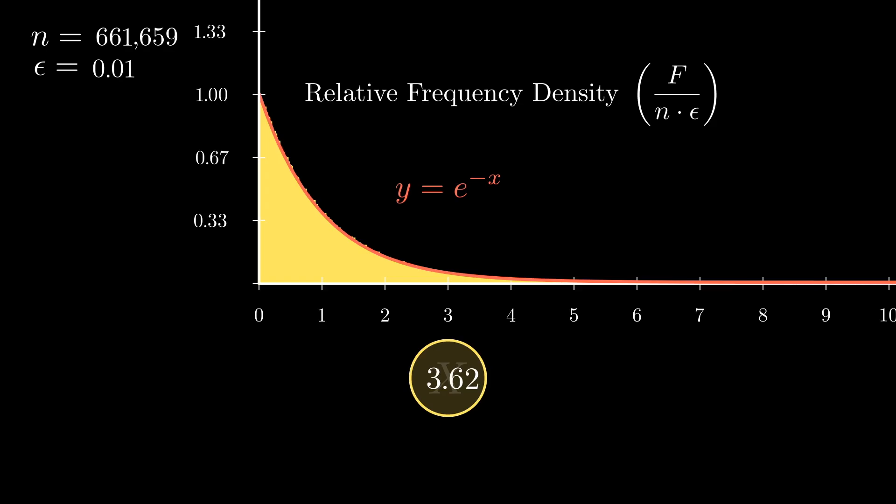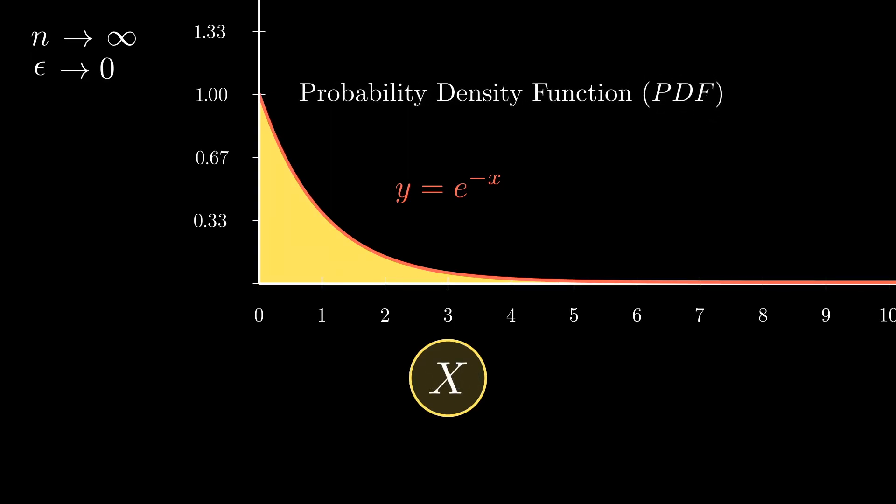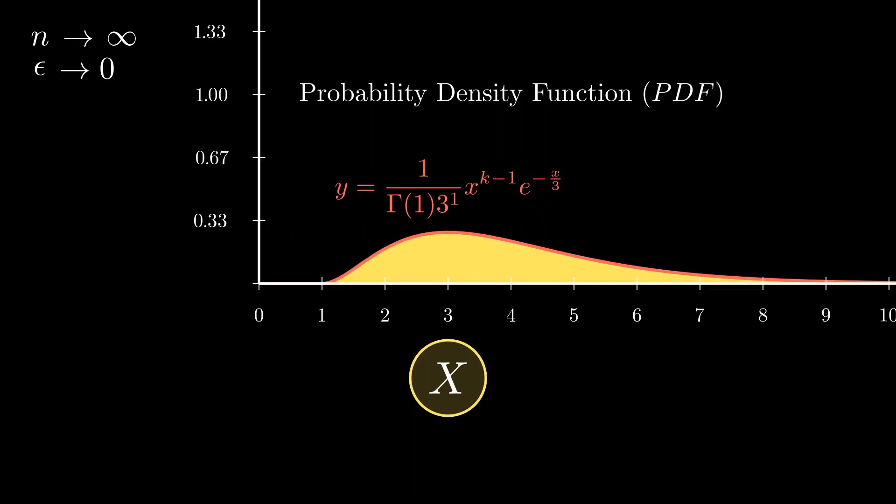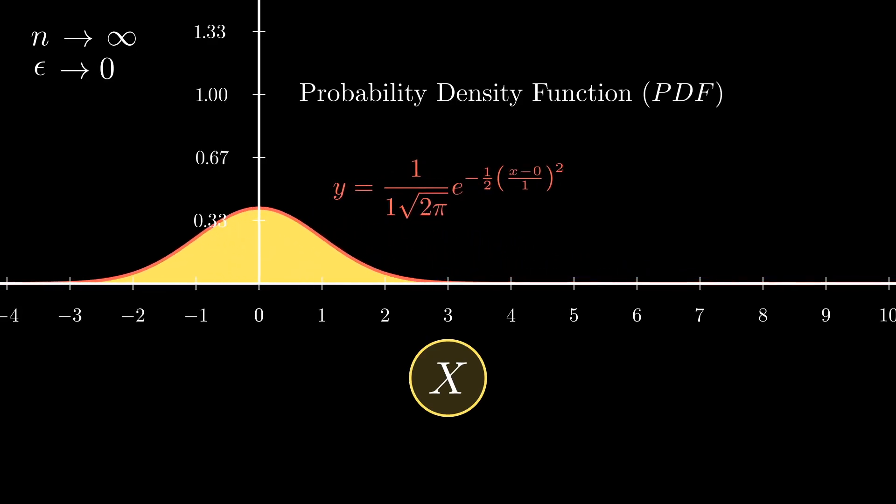In the limiting case where n tends to infinity and epsilon tends towards 0, the histogram is described by a curve called the probability density function or PDF. In this particular case, the probability density function is e to the minus x, but any kind of curve, as long as it is positive and the area under it is 1, is a PDF and thus has a corresponding random variable.